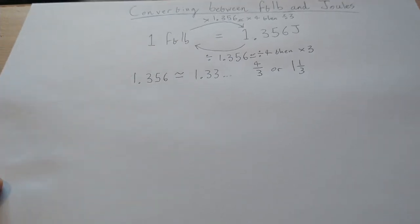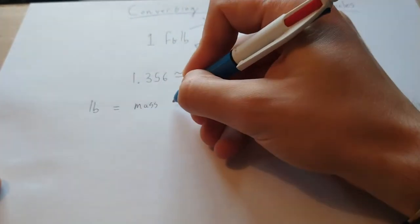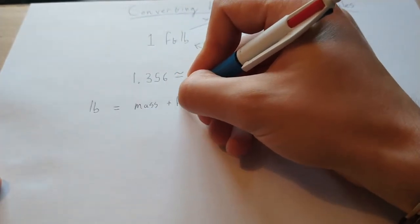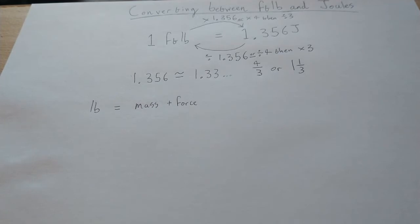To understand this we have to consider the imperial system. Now when the imperial system was used, pounds, which we normally think of as a unit of mass, was also used as a unit of force. Specifically the force of weight on a mass of one pound under the Earth's gravity.